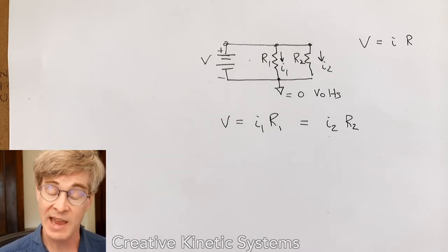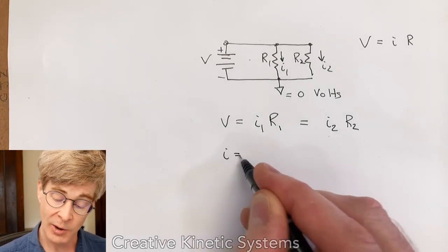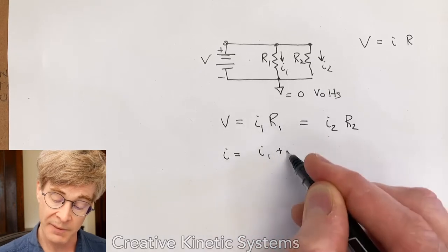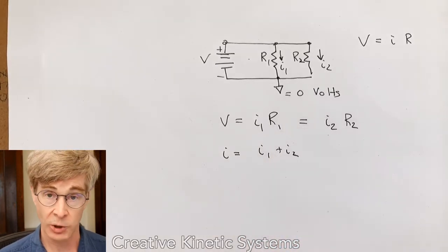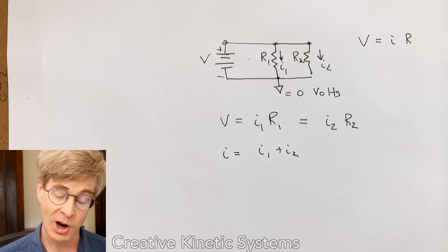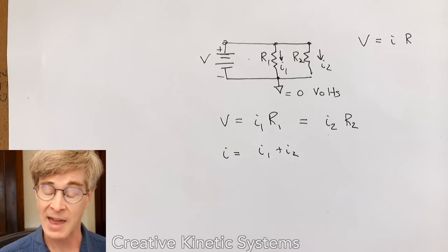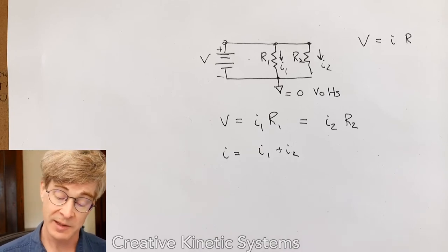Just as an aside, we can actually say now that the battery current would simply be the sum of the currents in the resistors by Kirchhoff's current law. All the charges coming out of the battery could go through one resistor or the other, but they don't vanish. So those two have to sum to the same.